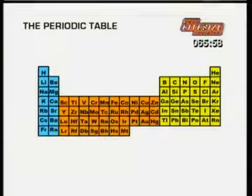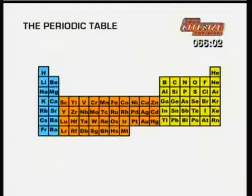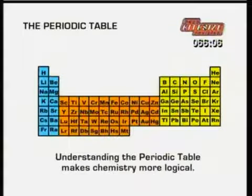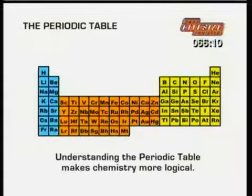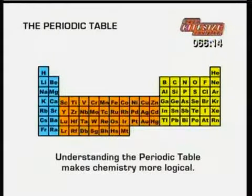The periodic table shows each element by its chemical symbol. Understanding the periodic table and the information it contains will help make chemistry more logical. This next clip explains some of the patterns using a reduced form of the periodic table.